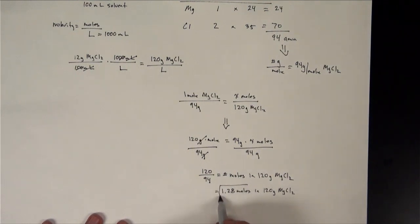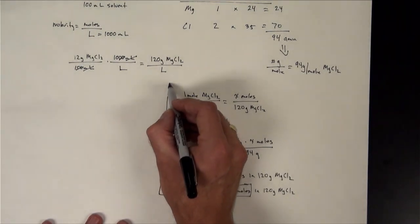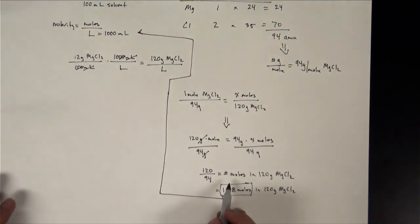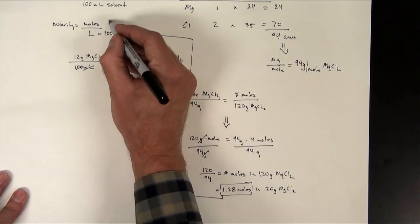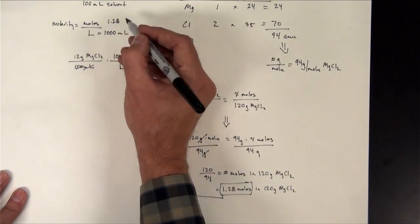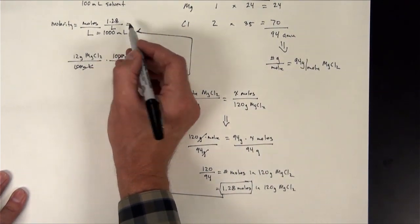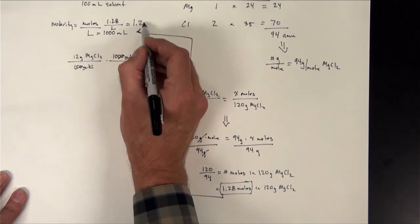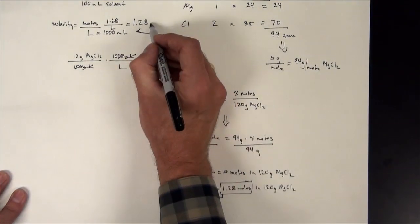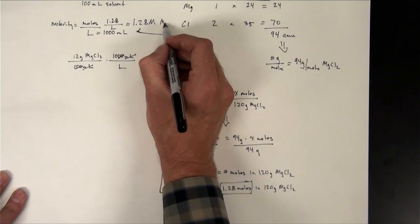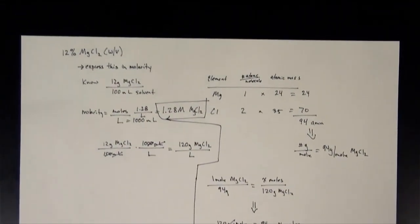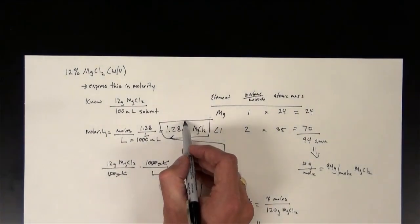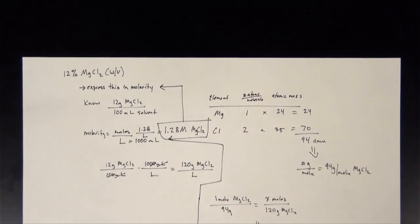I can now take this number and plug it into our molarity equation. This gives us 1.28 moles divided by 1 liter, so we have a 1.28 molar solution of magnesium chloride. And there's our answer.